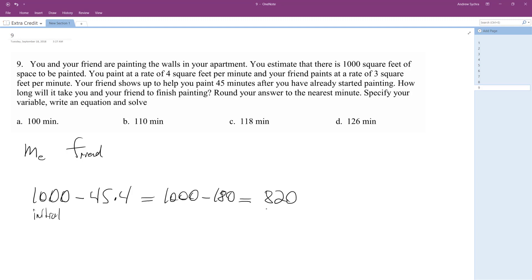820, so your friend shows up. Okay, so you paint. Alright, do this: 1 over 4 plus 1 over your friend. Alright, I figured this out.